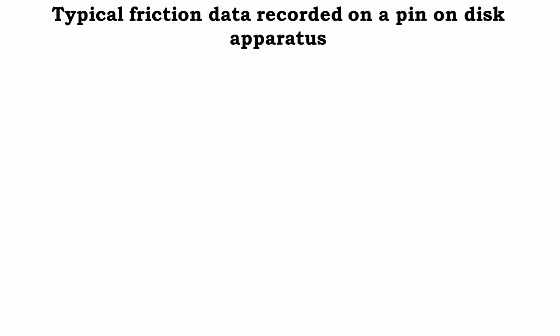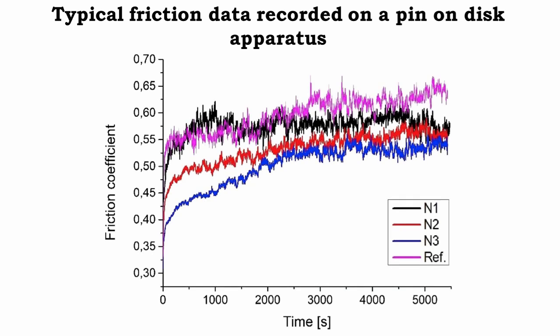This slide shows typical friction data that is recorded on a pin on disc apparatus. As we can see, the initial part of the data is much more unstable than the later part. This behavior is attributed to the running-in phenomenon. During running-in, the surface topography changes and chemical reactions take place until the system comes to a steady state. The average value of the steady state coefficient of friction is usually reported.